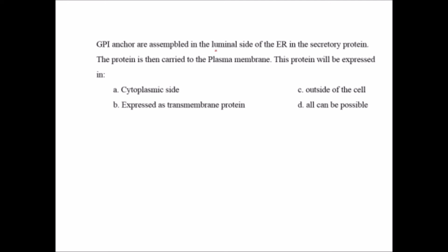The next question: GPI anchors are assembled on the luminal side of the ER in a secretory protein. The protein is then carried to the plasma membrane. On which side will this protein be expressed? Before discussing the answer — if a protein is synthesized on the luminal side of the ER, it will be transported to the Golgi body in vesicle form, and the vesicle fuses with the Golgi body.